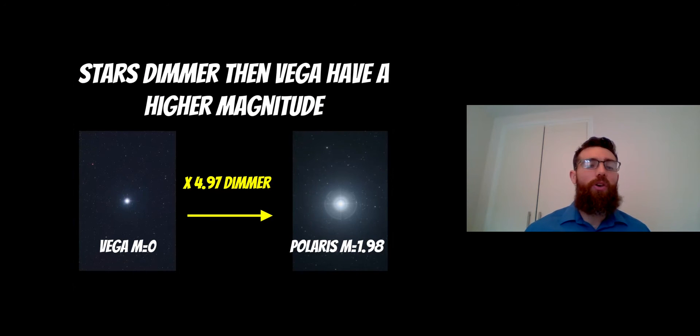For a star that is dimmer than Vega, it's going to have a higher magnitude, which might sound a bit strange, but that's how it works. If Vega has a magnitude of zero and we have Polaris—which is actually our north star or pole star—it's actually five times dimmer than Vega, but its magnitude is 1.98. That's because of this logarithmic scale.